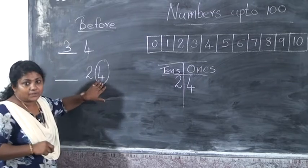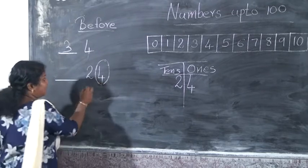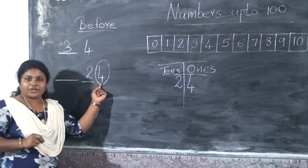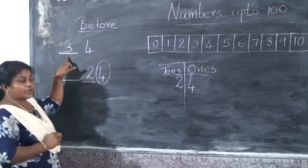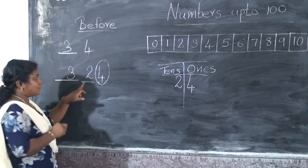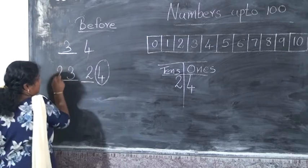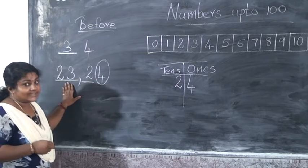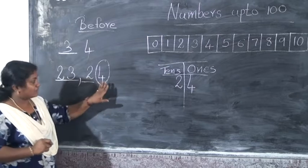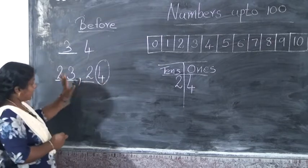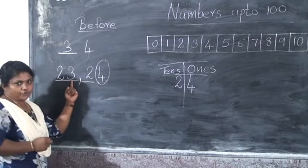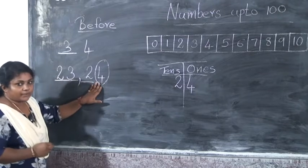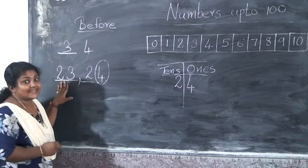In the 1s place, which is this number? 4. We have to look the number on the 1s place. 4 in the 1s place — before 4 is 3. And you have to write 2 in the 10s place. So the before number of 24 is 23. We have to first look the 1s place and write that before number.